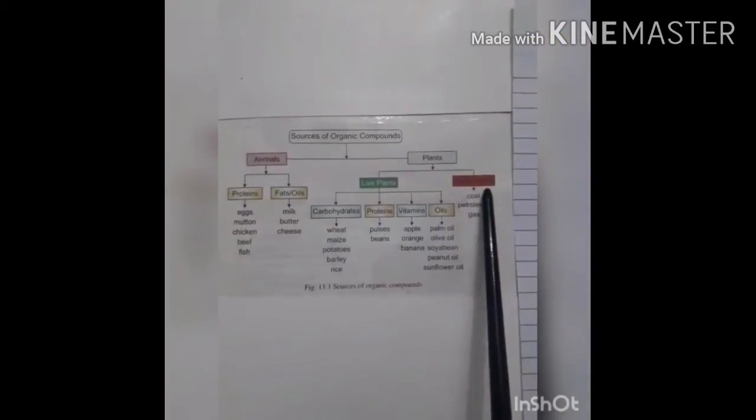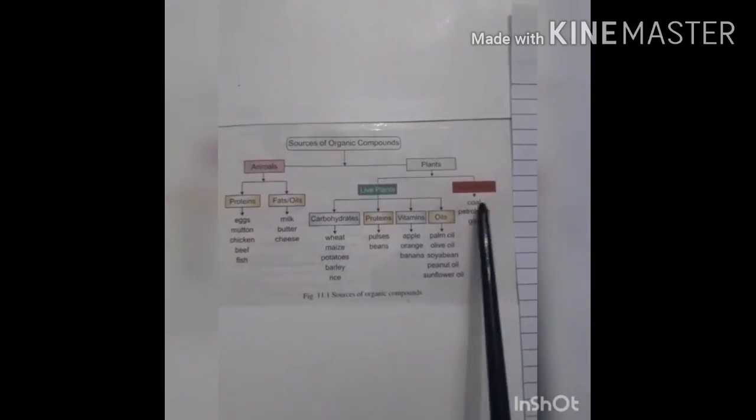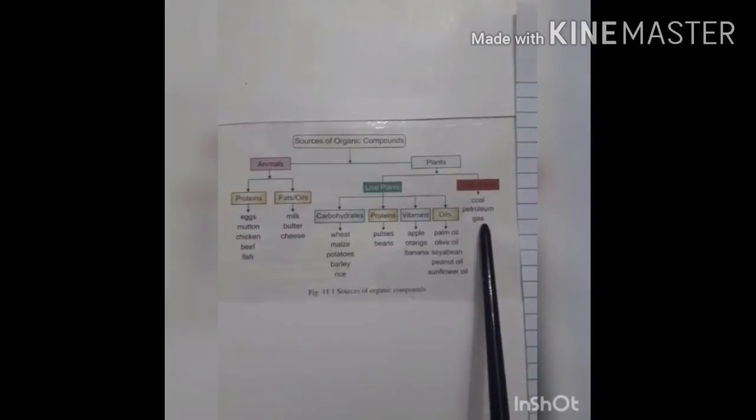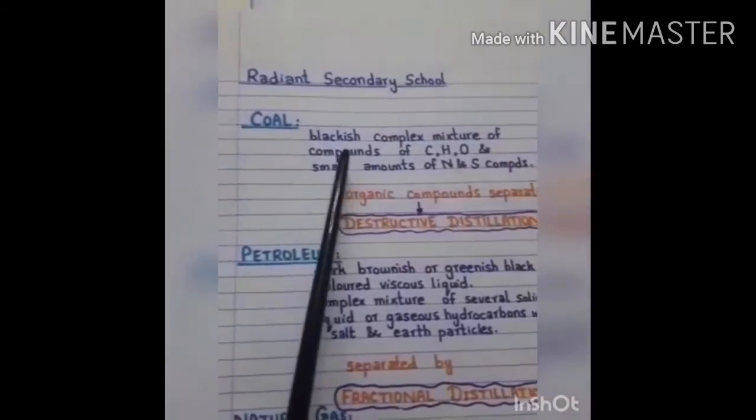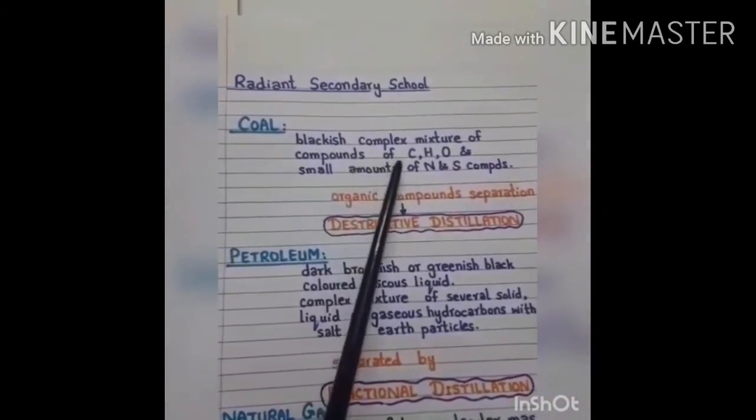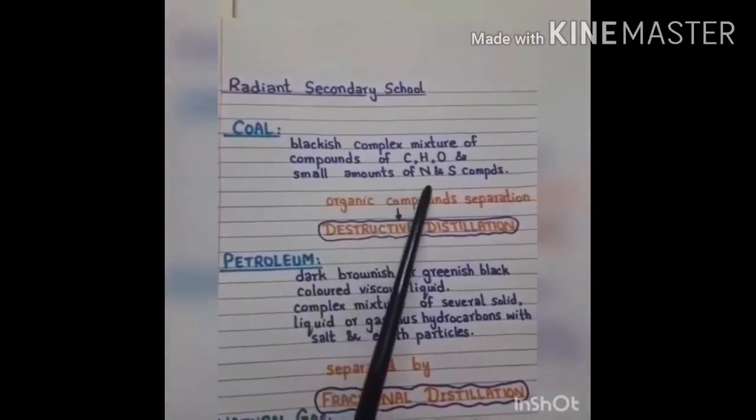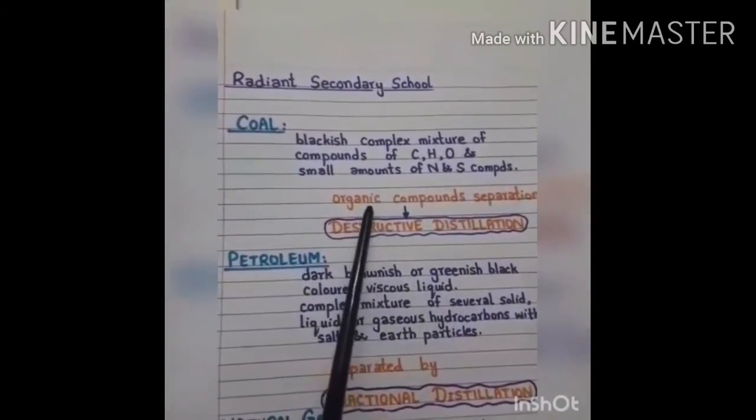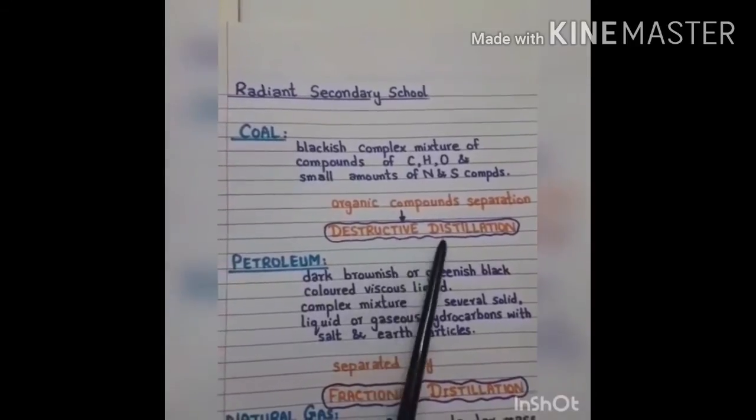Dead plants buried under the earth crust are converted into coal, petroleum, and natural gas through different biochemical processes. Coal is a blackish complex mixture of compounds of carbon, hydrogen, oxygen, and small amounts of nitrogen and sulfur compounds. These organic compounds are separated by destructive distillation of coal.